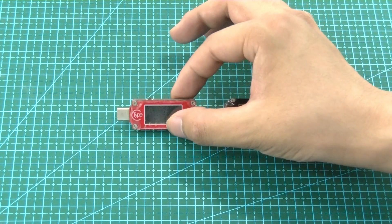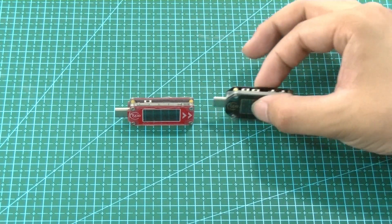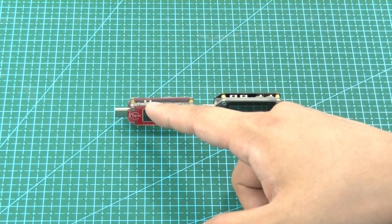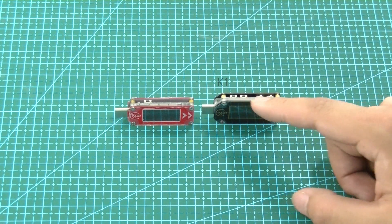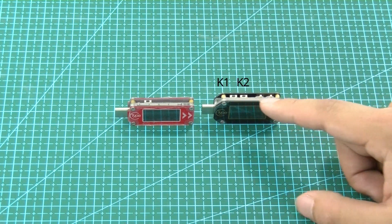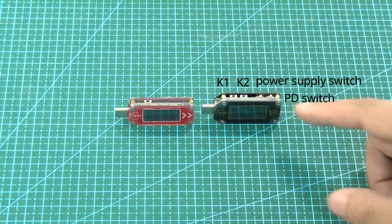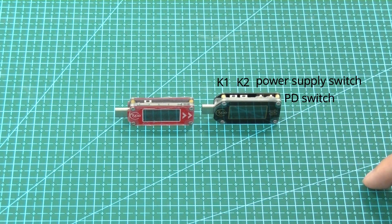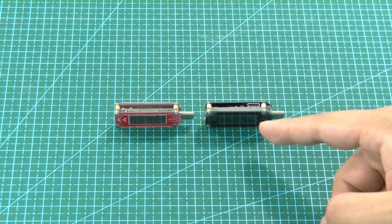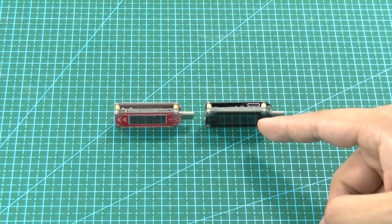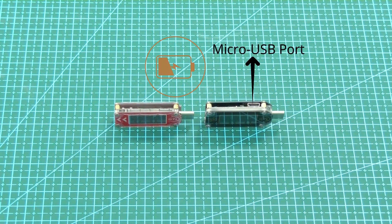When we lift the units onto their side, we can see there is only one button on TC64, while TC66C has four: K1, K2, a power supply switch, and a PD switch. On the other side, we can see there is a micro USB port on TC66C, which is used for independent power supply and communication with PC software.